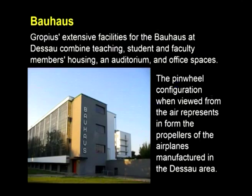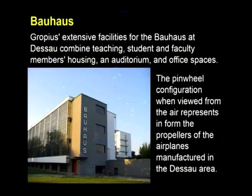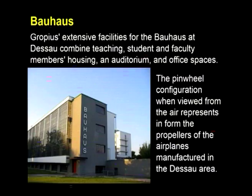Gropius's extensive facilities for the Bauhaus at Dessau combined teaching, student and faculty housing, auditorium and office spaces all in one single campus. He came up with an arrangement called the pinwheel configuration, where from one central point there are four different radial configurations, each wing representing a different function. If you look at the whole building from the air — a helicopter view — it resembles the form of a propeller of an airplane, which were manufactured in that Dessau area, famous for manufacturing aircraft propellers.